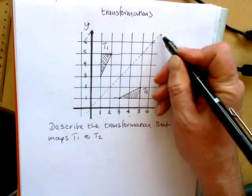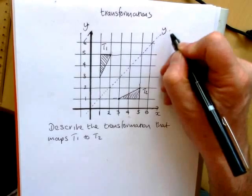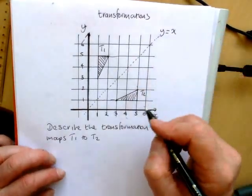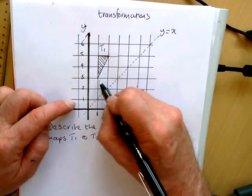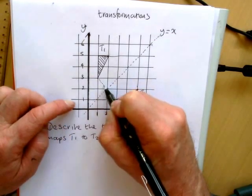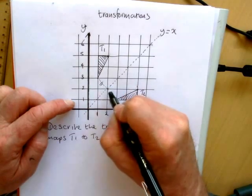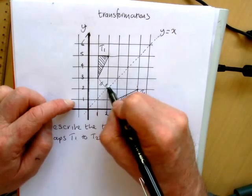We'll do the more straightforward one of the two, which is our y equals x line. Now, if it is symmetrical, then when we connect, the line that connects will be the same distance from the symmetry line and it will be at right angles.